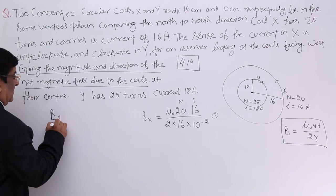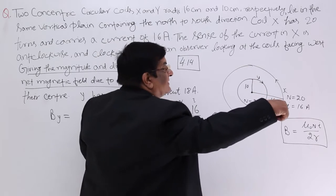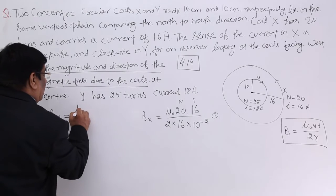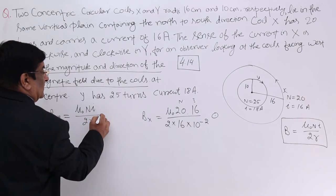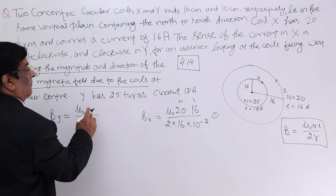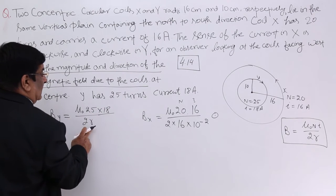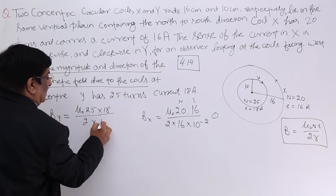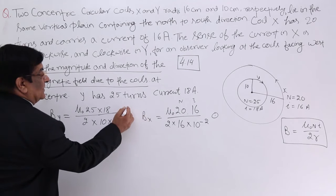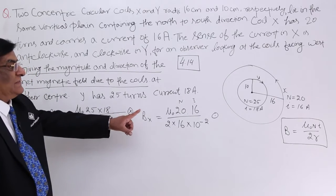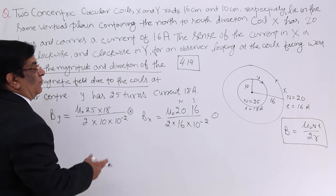Now for coil Y, By = μ₀nI upon 2r, where n = 25, I = 18 A, and r = 10 cm = 0.10 m. The current in Y is clockwise, so its direction is going inward. So Bx is coming out and By is going in.